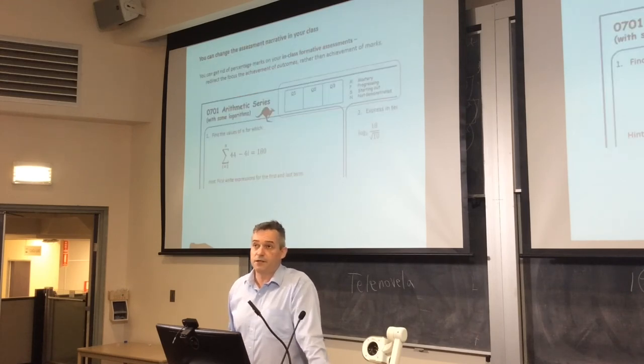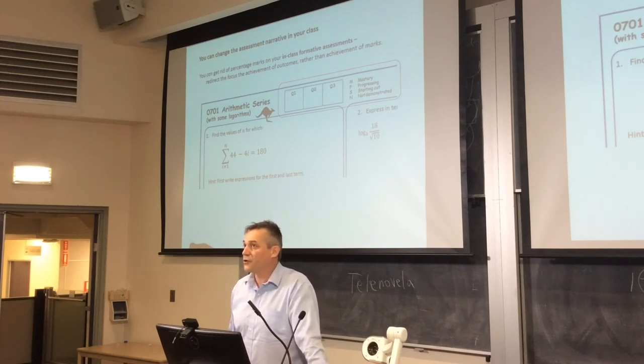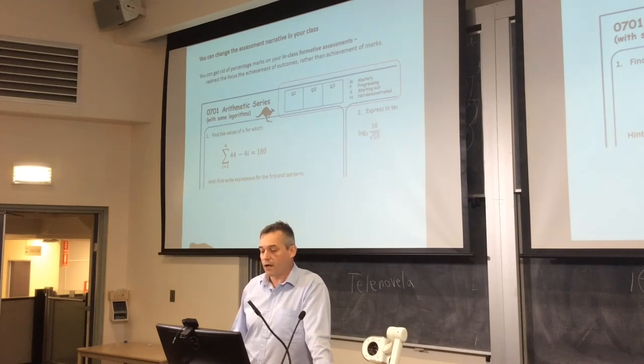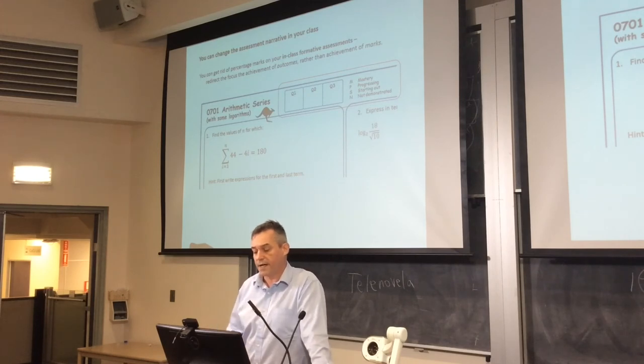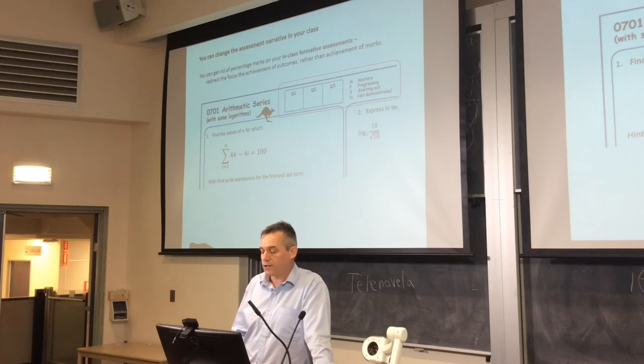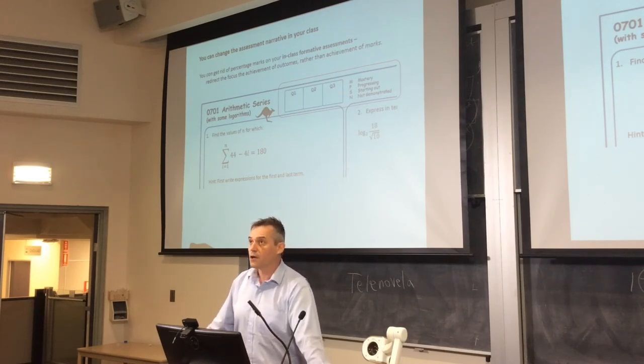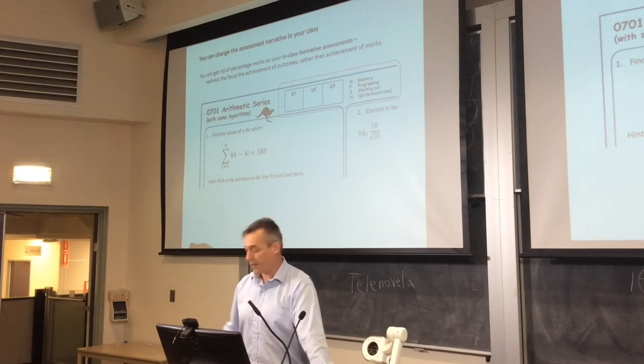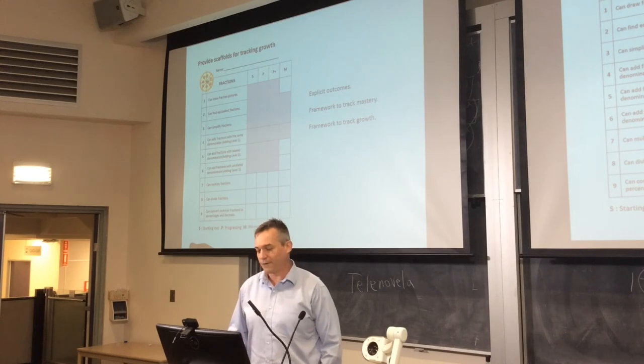You can change your own assessments in your class. I work very hard in my class to get away from scores and numbers on internal assessment tasks. So I go for a mastery-type approach rather than a quiz that students have done. Rather than getting a single mark for this, they actually get for each question. I ask them to self-assess. I don't assess that for them. I ask them to self-assess: what's your level of mastery for each question?